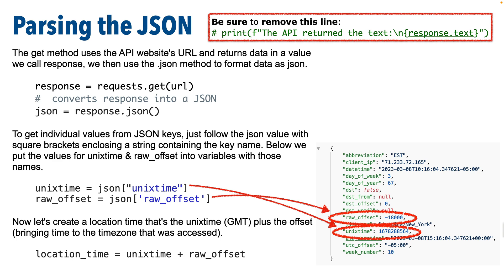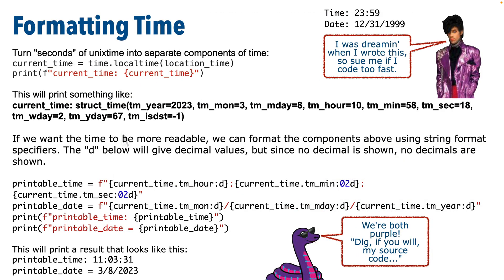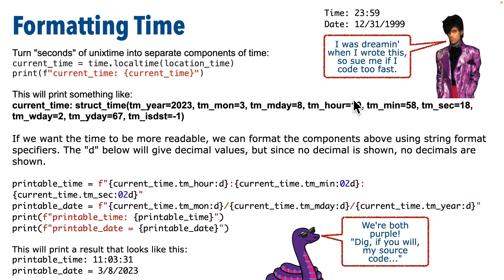By calling the time library's local_time method and passing in our location_time in seconds, this is going to break apart the time into a bunch of usable components. By printing current_time, we'll see all the different components: tm_year is the year, tm_mon is month, tm_mday for the date day of the month, tm_hour, tm_min for minutes, et cetera.